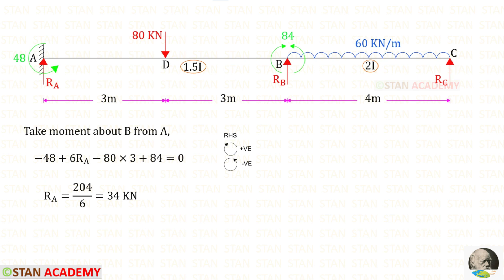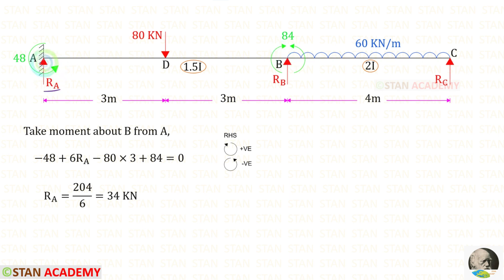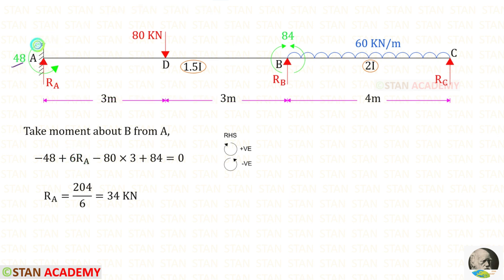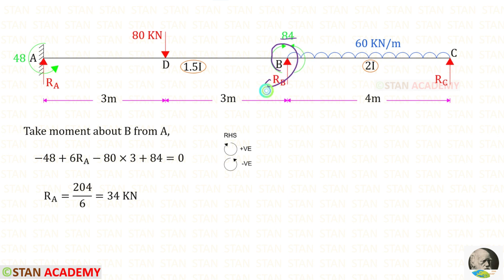Now let us take the original beam. Using MA and MB, we can find the vertical reactions. To find RA, we take moment about B. RA acts clockwise (positive) with distance 6. MA acts anticlockwise (negative). The 80 kN point load acts anticlockwise (negative) with distance 3. MB acts clockwise (positive). For RA, we get 34 kN.